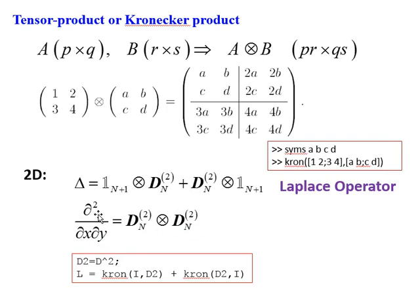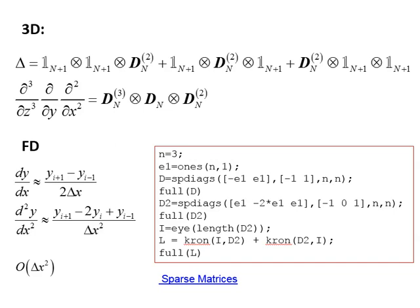We can also use the kron command to get other operators, like the mixed second derivative in x and y, which gives DN squared tensor product with DN squared. Additionally, we can get the 3D Laplace operator by using tensor products with the identity matrix (N+1) by (N+1) by (N+1) combined with DN squared, and so on.